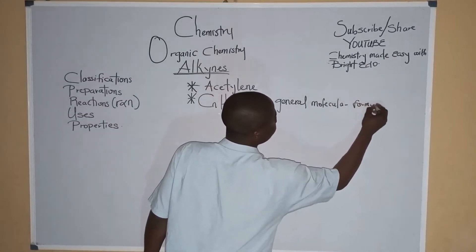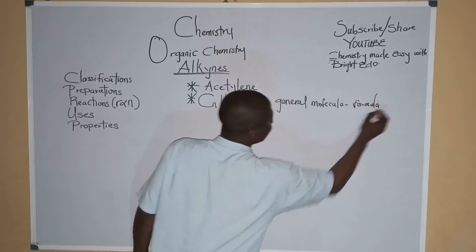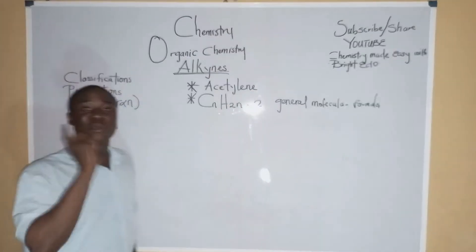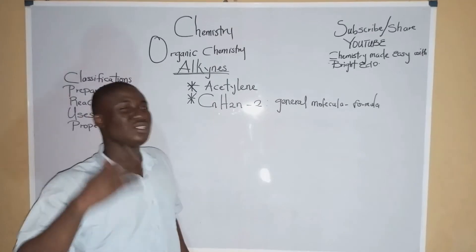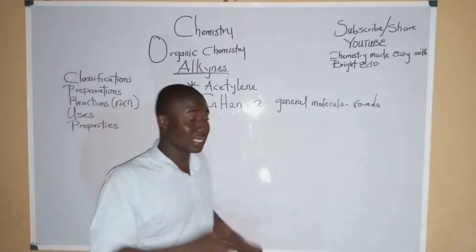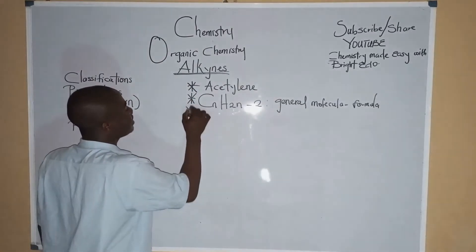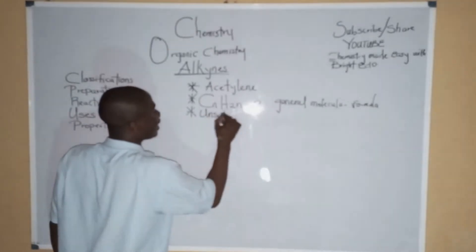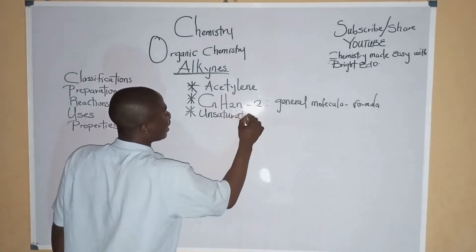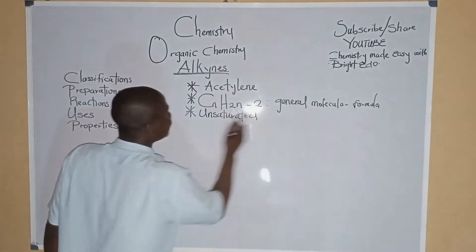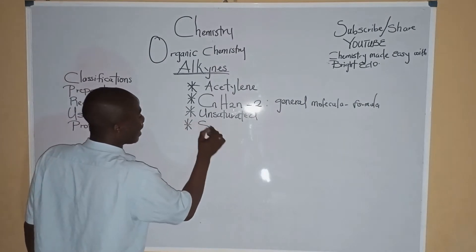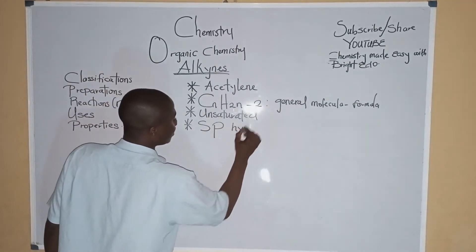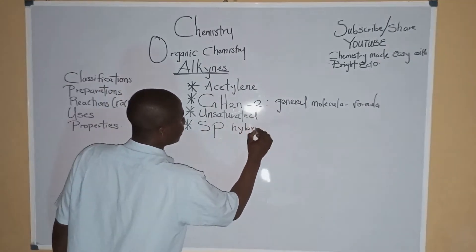This is the general molecular formula for alkynes. Alkynes are highly unsaturated. They are unsaturated and they are SP hybridized.